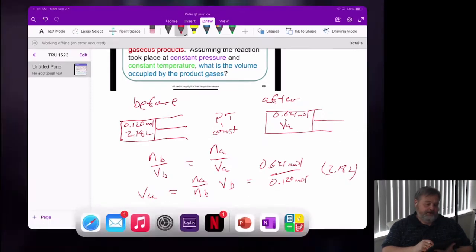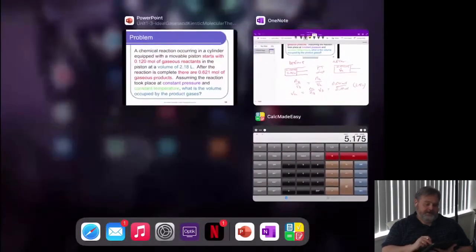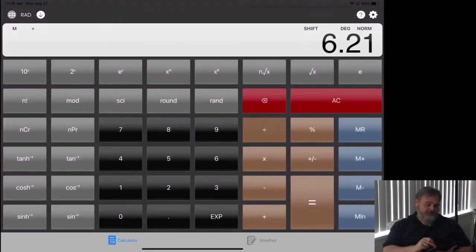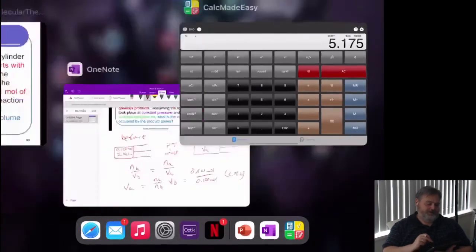We have to do a little math here. We're going to see that 0.621 divided by 0.120 is 5.175.